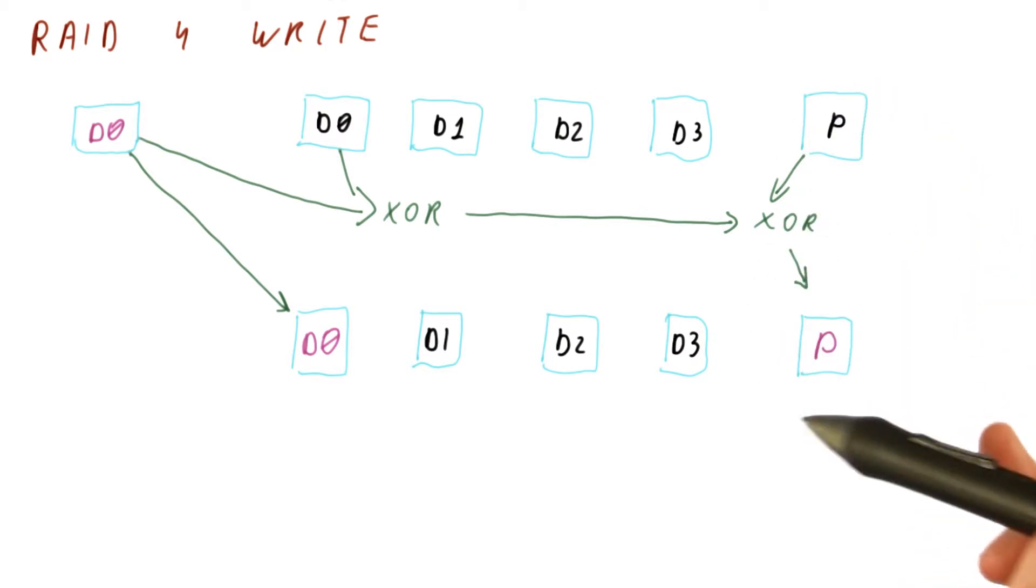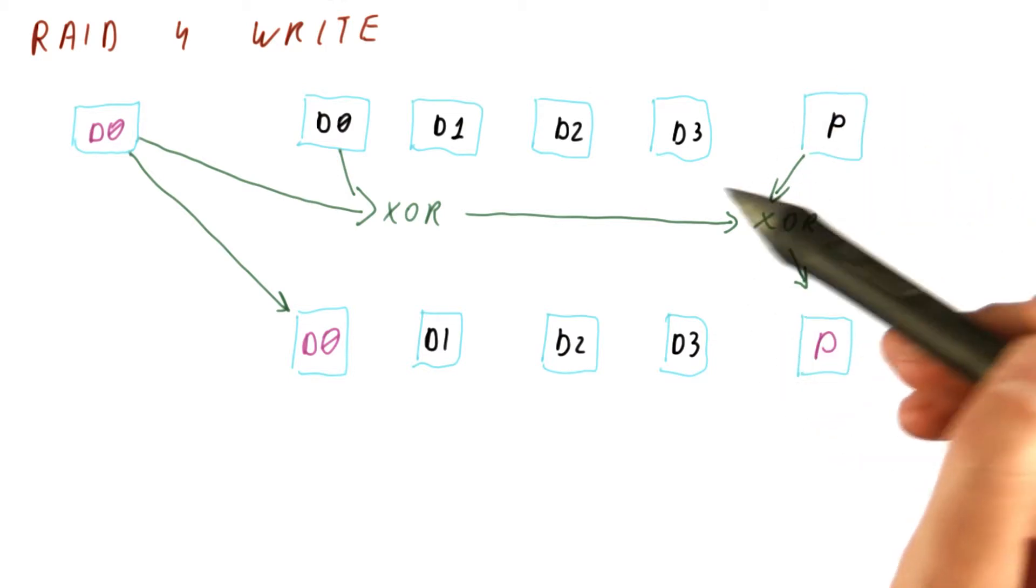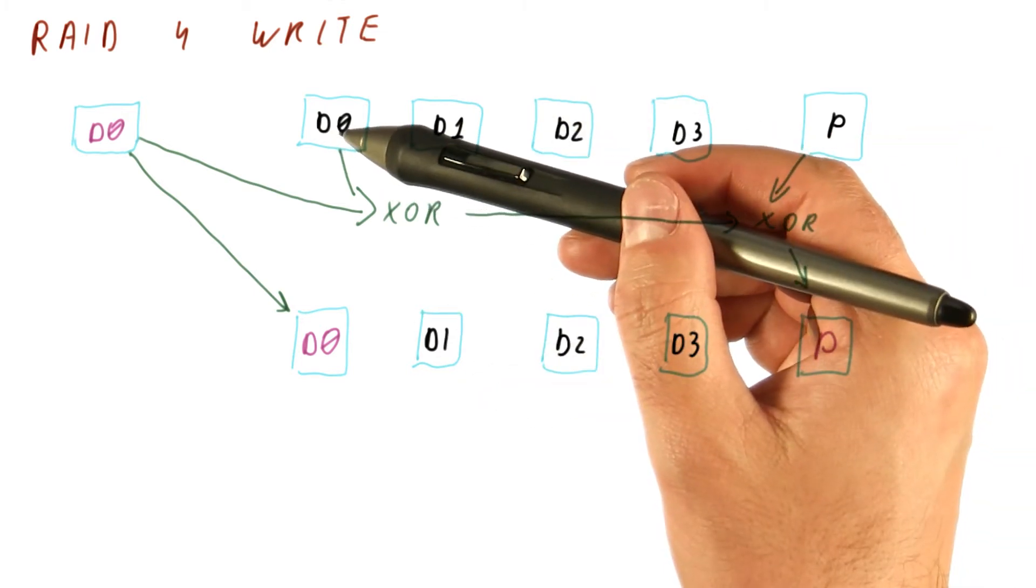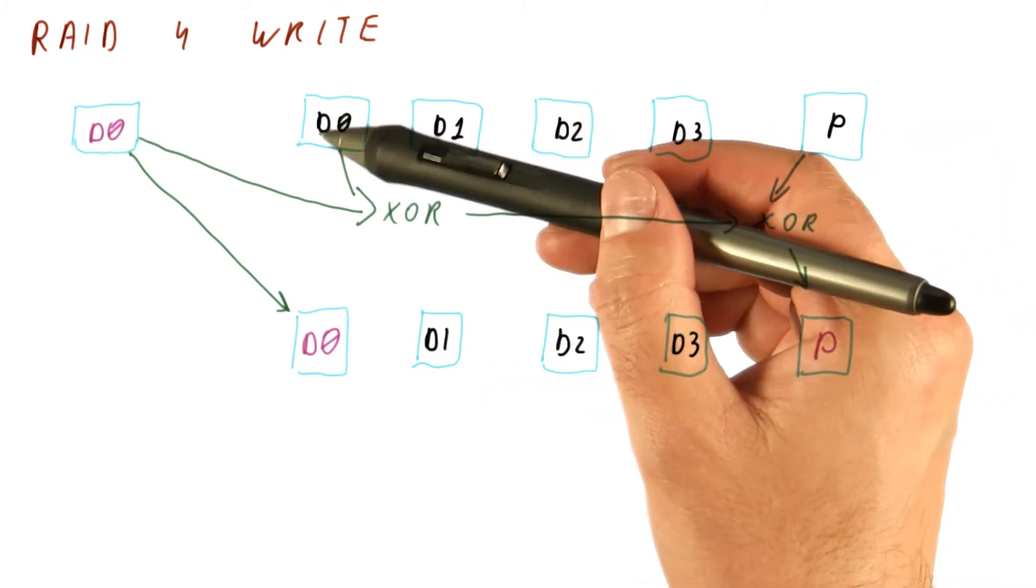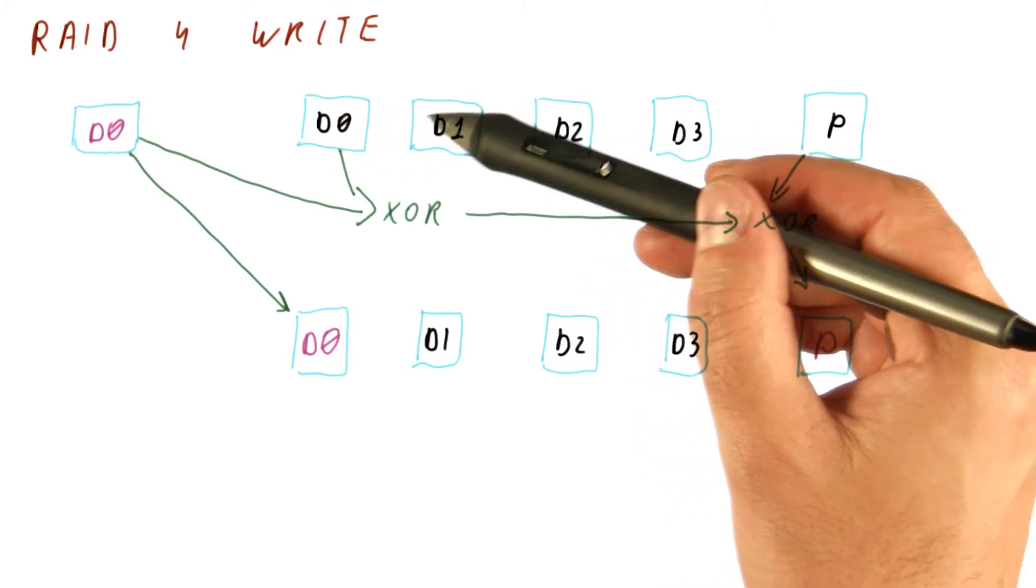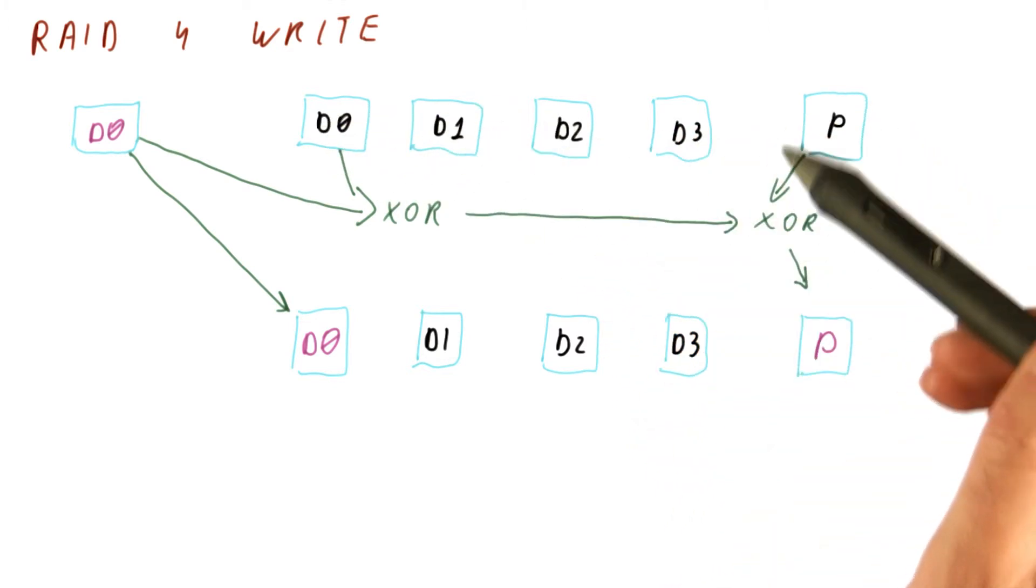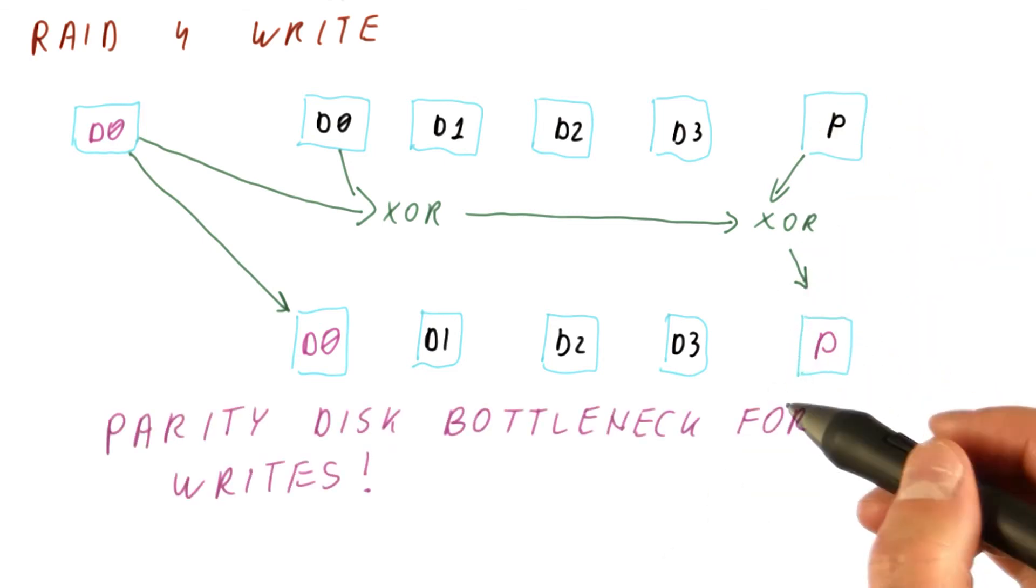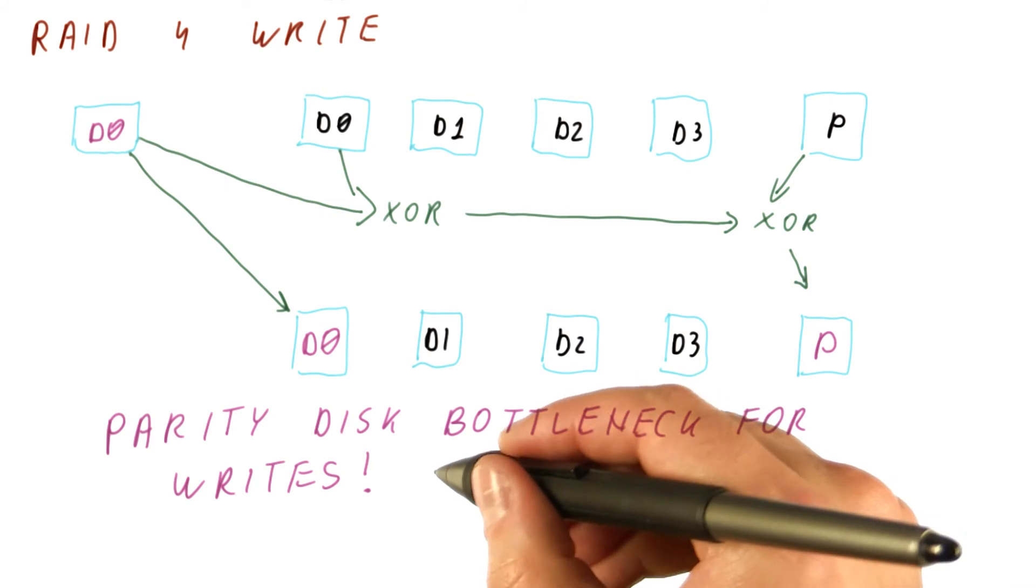And the parity disk will be a bottleneck because the four disks here are accessed by writes in a way that reads and writes one disk. Another write would maybe read and write this disk, but all of these read and write the parity disk, so it becomes a bottleneck. And because the parity disk is a bottleneck for writes, we have RAID 5.